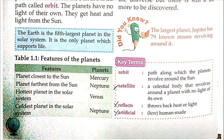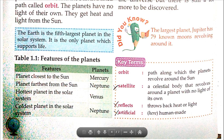Features table of the planets: planet closest to the sun — Mercury; planet farthest from the sun — Neptune; hottest planet in the solar system — Venus; coldest planet in the solar system — Neptune.